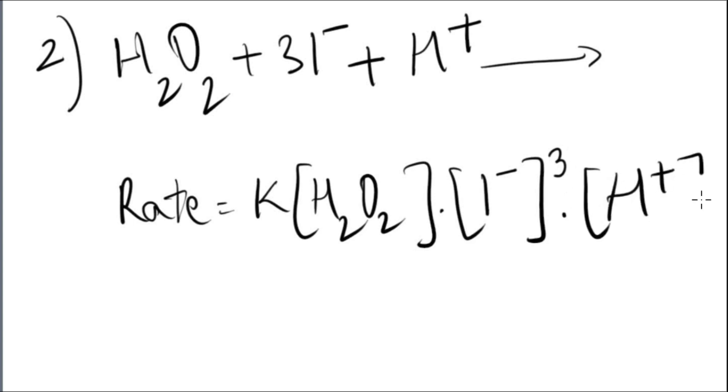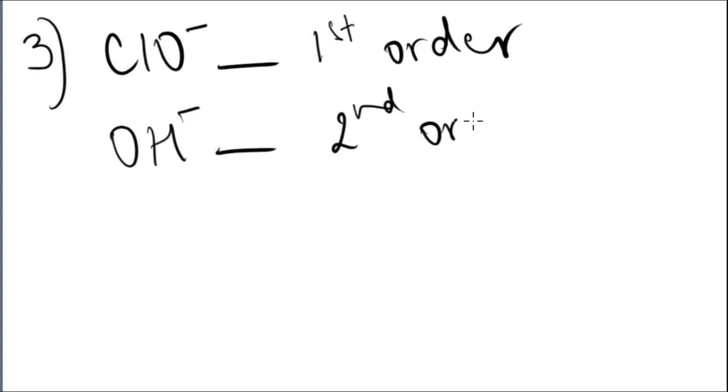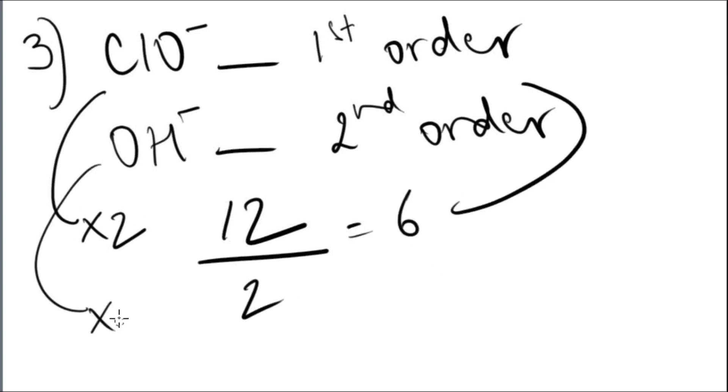The last question was you had to tell me the order of the reactants. The first one was first order and the hydroxide ion was second order. Why? Because once you doubled the concentration of CLO, the rate increased by two as well, so it's first order. When I double the concentration of hydroxide ion, the rate increased by four, so it is second order because two to the power of two.